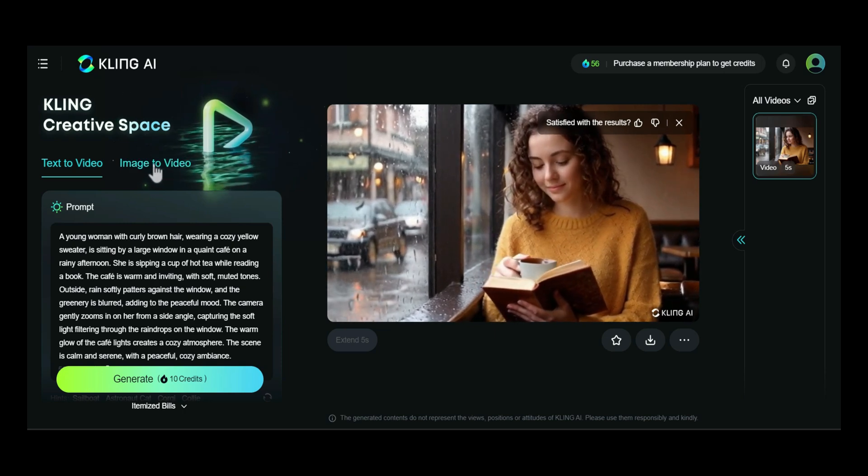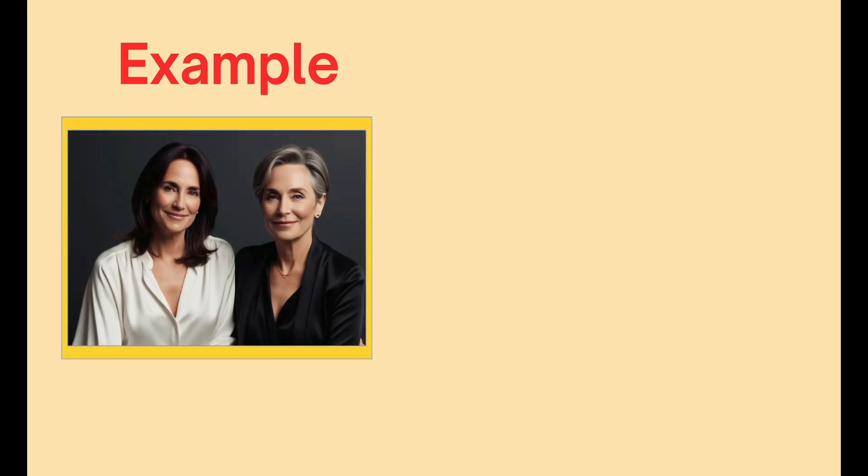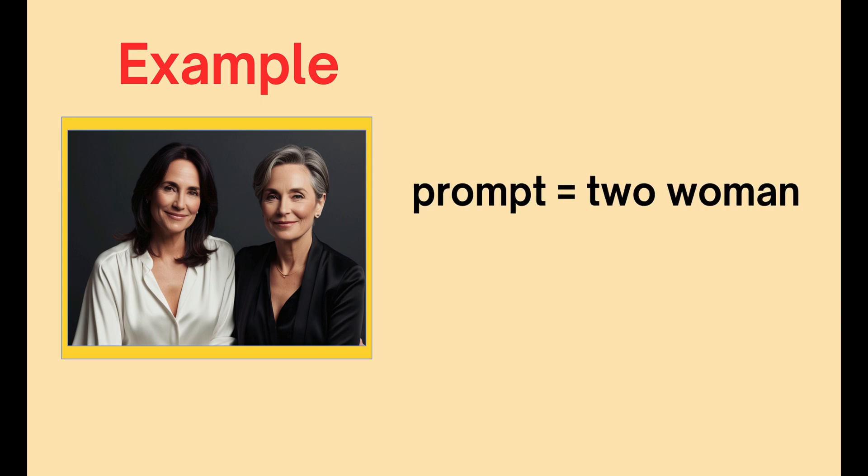Now let's move on to the image-to-video feature. The image-to-video feature is currently the most popular tool because it gives creators more control over the video production process. Creating video prompts using images is much simpler compared to using text. The formula for the prompt is: subject plus movement, background plus movement. Subject is the main focus of the video; movement describes the actions of the subject; and background sets the scene where everything takes place. Here's an example: we have an image of two women, and we want to create a video using this picture. All we need to do is describe the movement of the main subjects — the two women. The prompt could be as simple as 'two women hugging each other.'